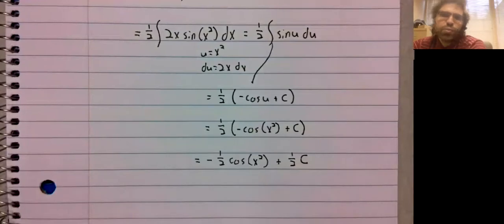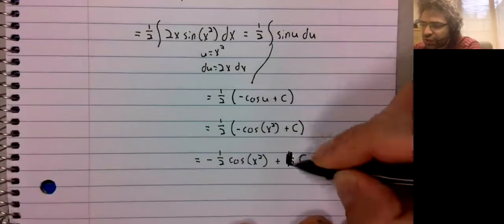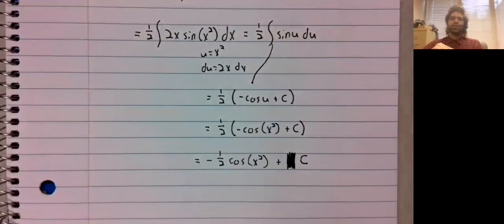So one half C is a completely arbitrary constant, it could be any real number. Therefore, since this one half isn't really doing anything, it does not need to be written in.